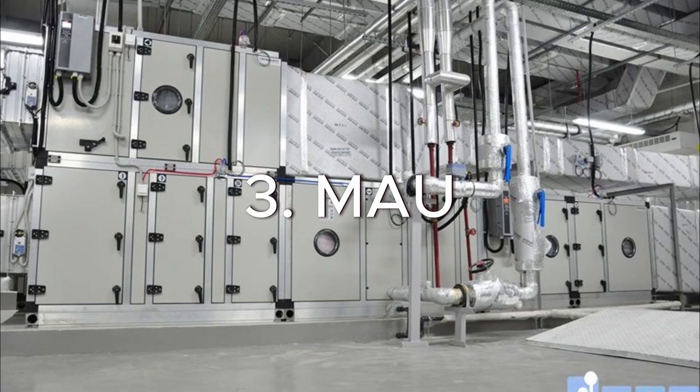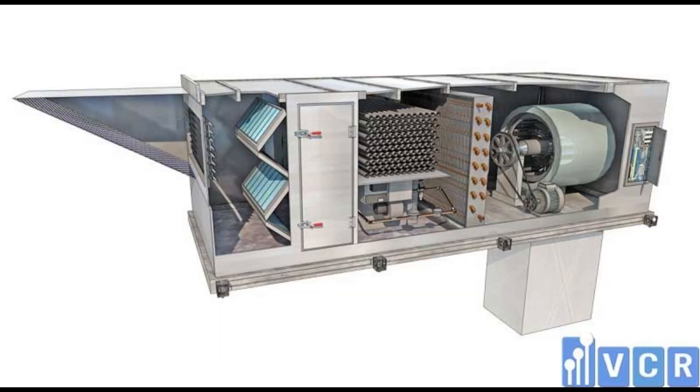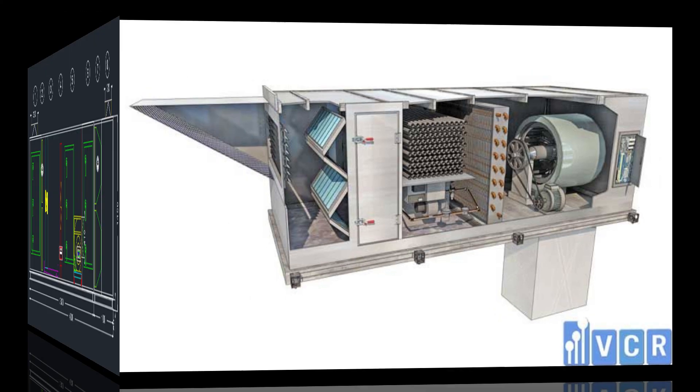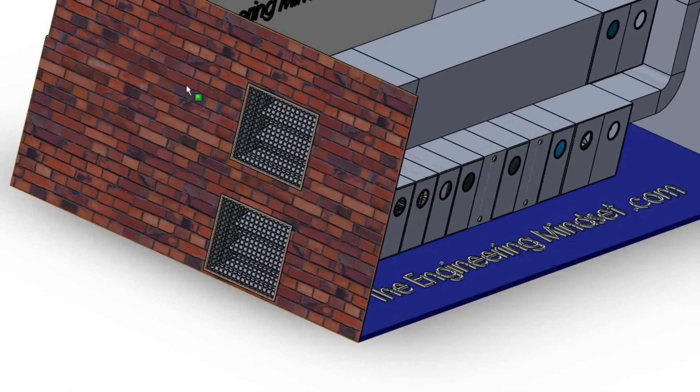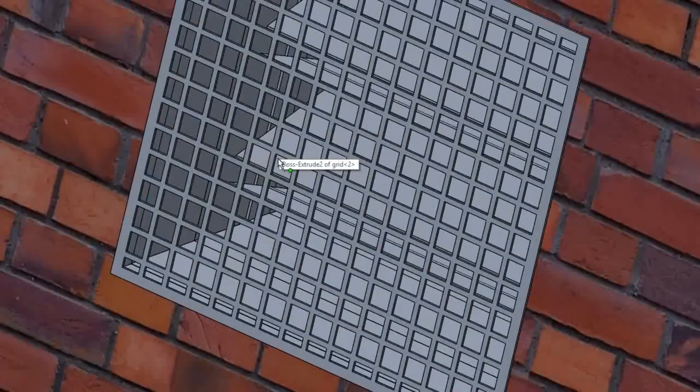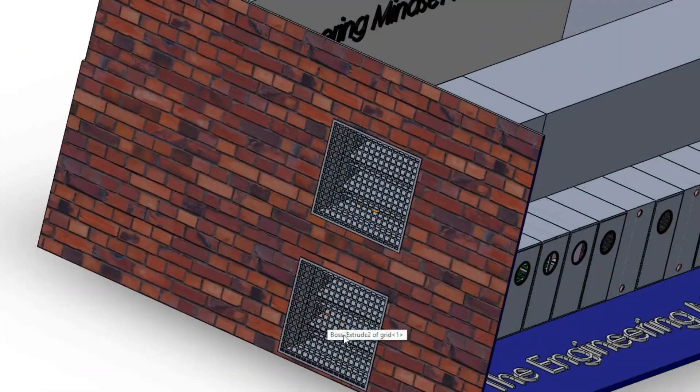Lastly is MAU, short for Makeup Air Unit, which is used in laboratories and areas with potential air contaminants, viruses, and other harmful substances. It exhausts a significant amount of air from the room to prevent cross-contamination and potential health hazards to personnel working in the area. This unit supplies 100% fresh air to the room and removes most of the air inside.